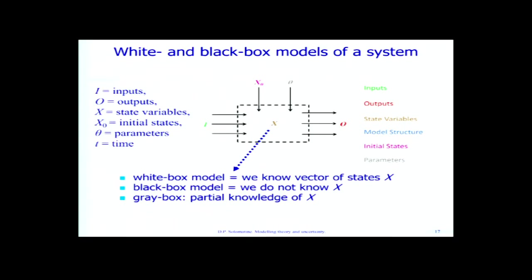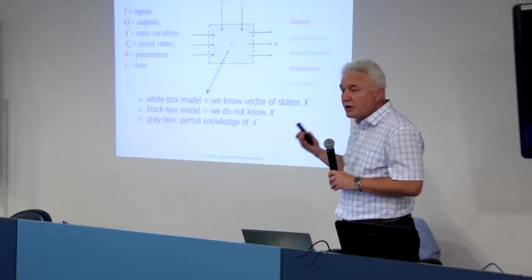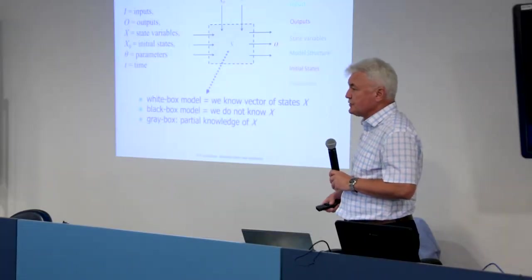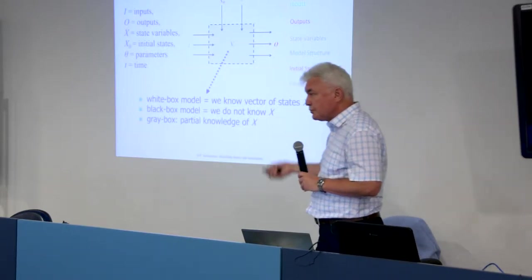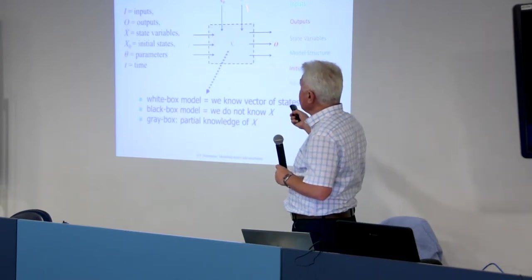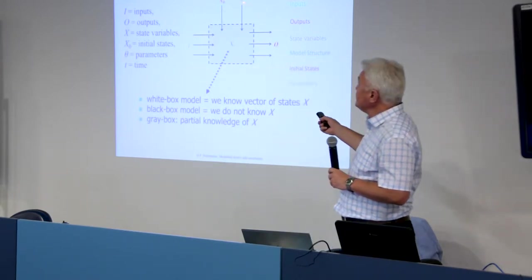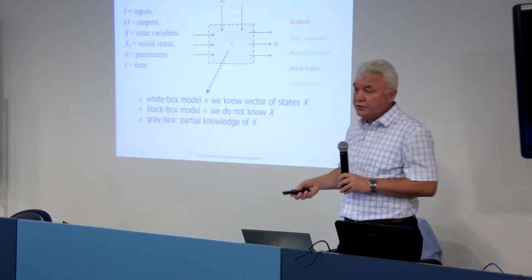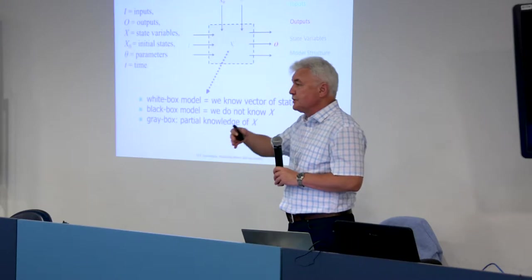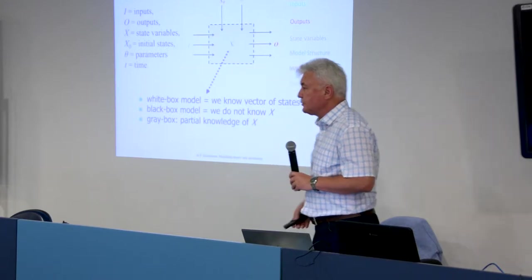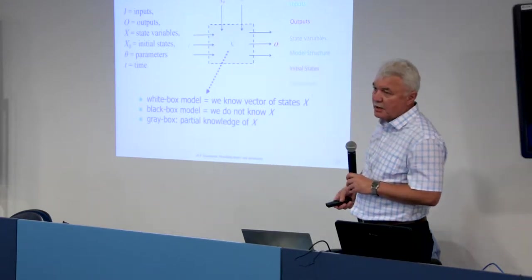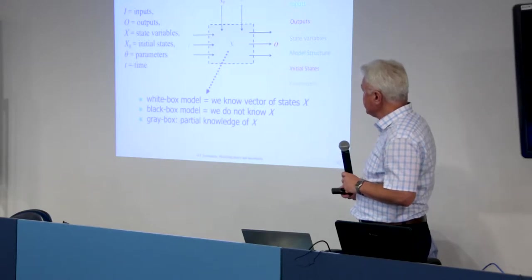Now, what is this x0 and theta? So x0 is initial state of the model. When you run the model, you always have to give these values to initial states, which you don't know often. You have to assume something. And theta are parameters of this model.